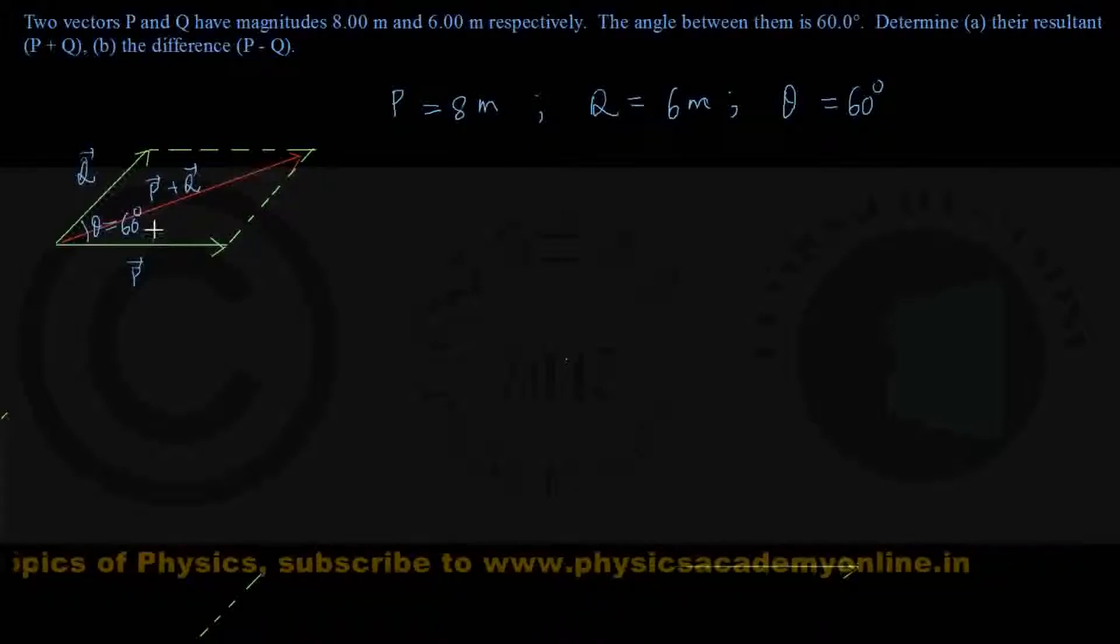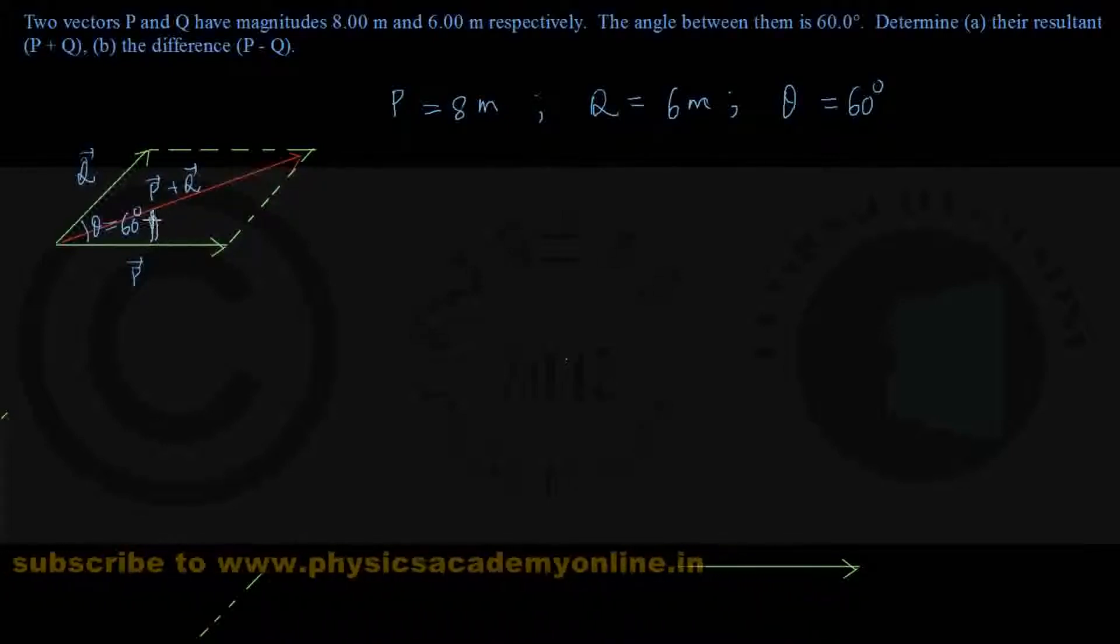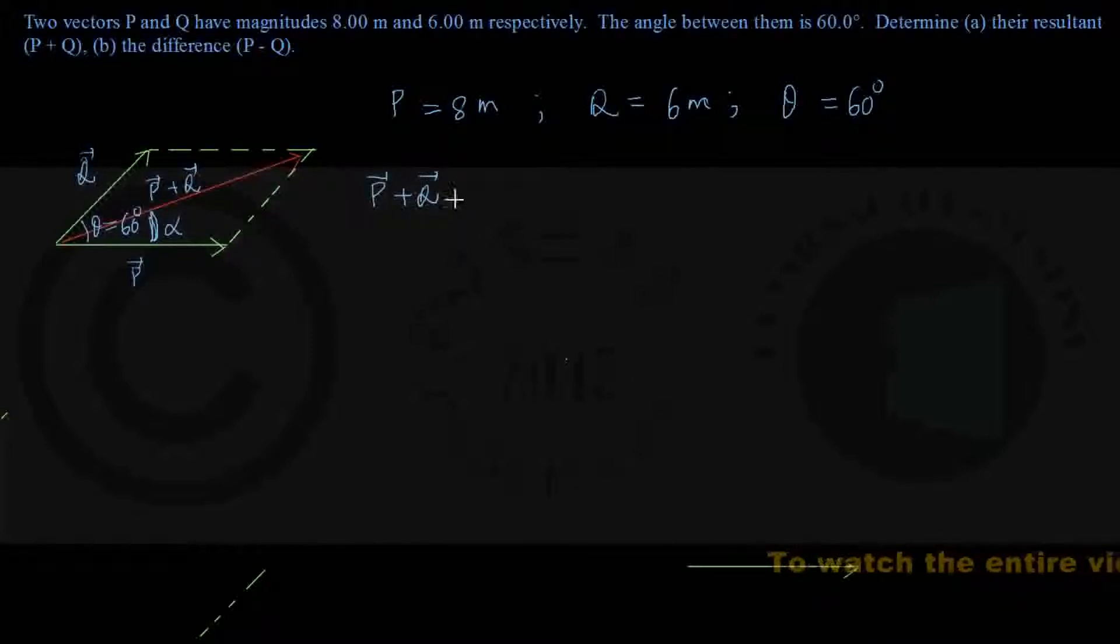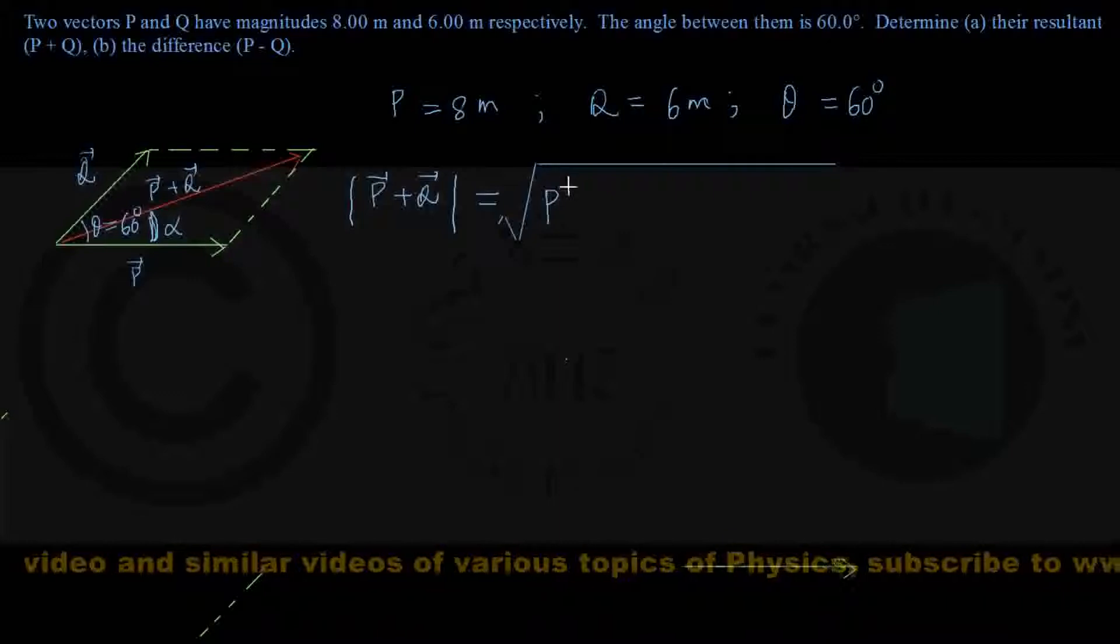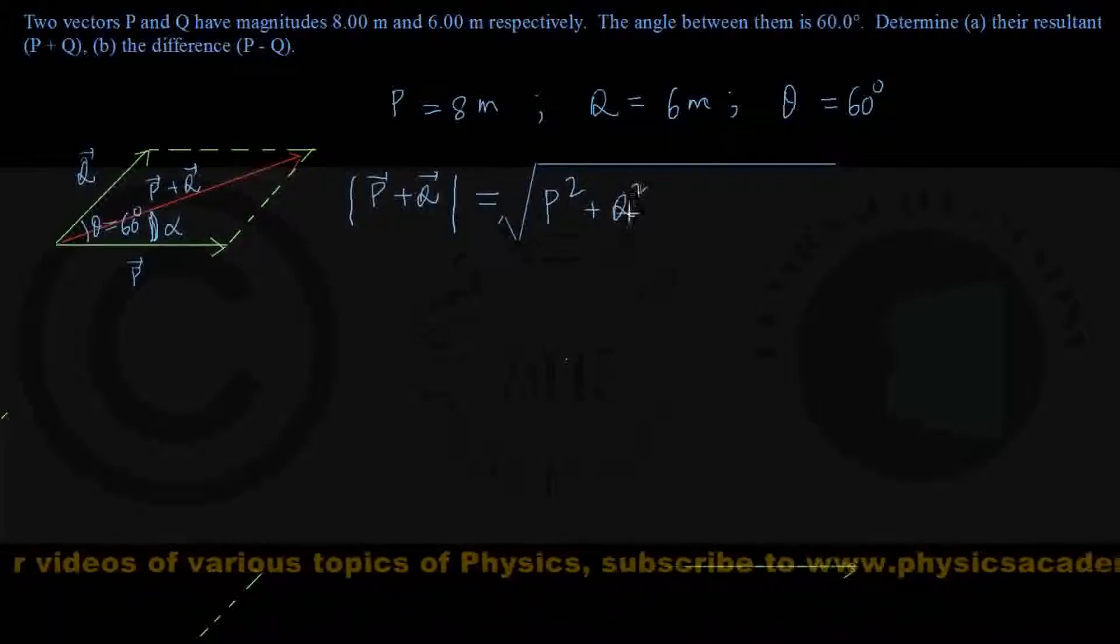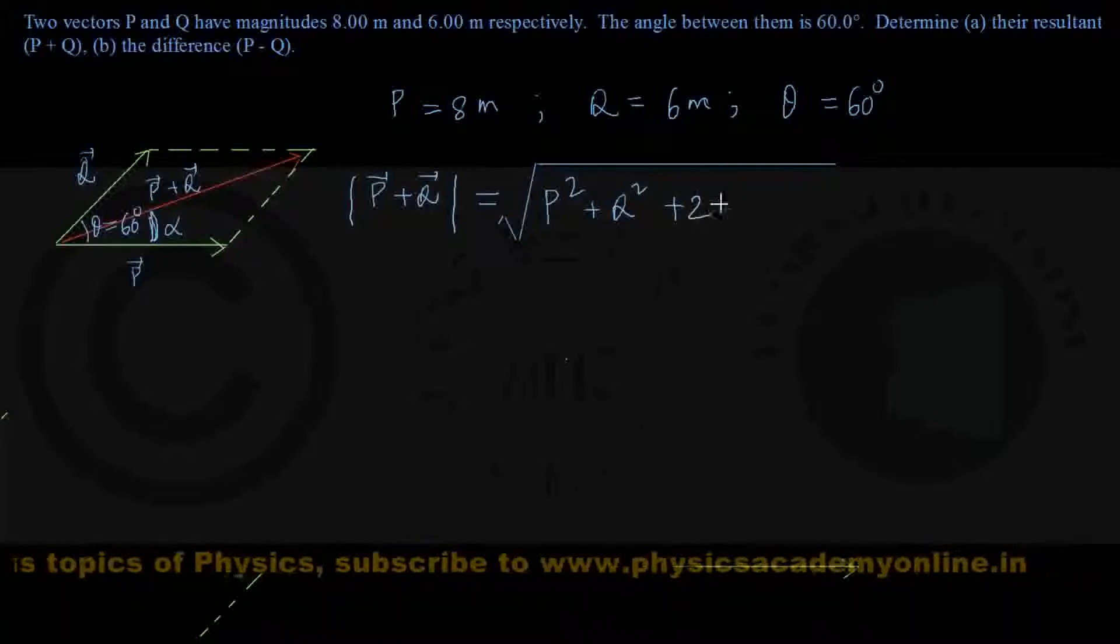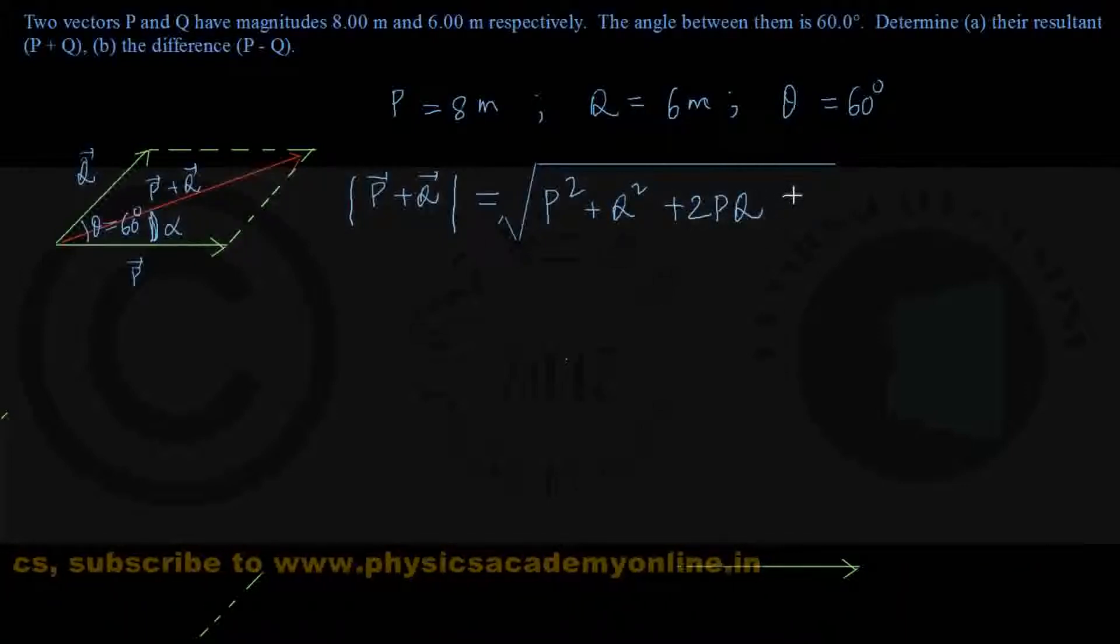Let's assume P plus Q makes an angle alpha with vector P. To find the value of P plus Q, the magnitude is given by the formula: modulus of P plus Q equals the square root of P squared plus Q squared plus 2PQ cosine of the angle between these two vectors. This is the formula from vector addition.